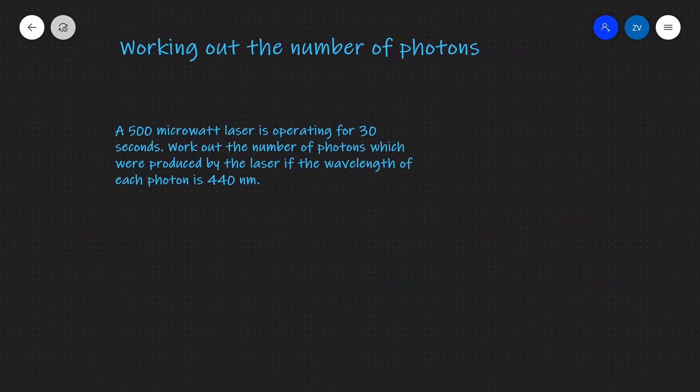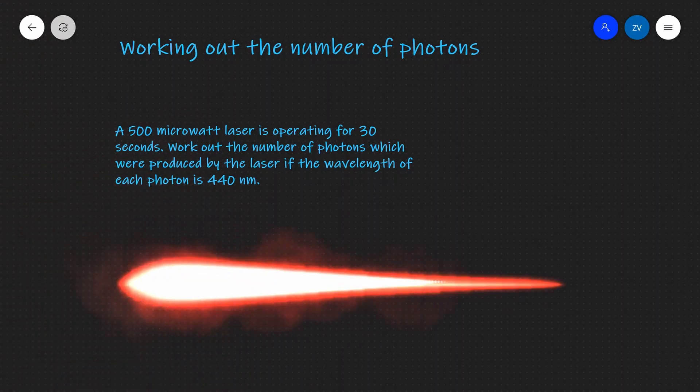Let's have a look at another typical question, which is working out or calculating the number of photons. So let's imagine that we have a laser, a 500 microwatt laser is operating for 30 seconds. Work out the number of photons which were produced by the laser in those 30 seconds if the wavelength of each photon is 440 nanometers.